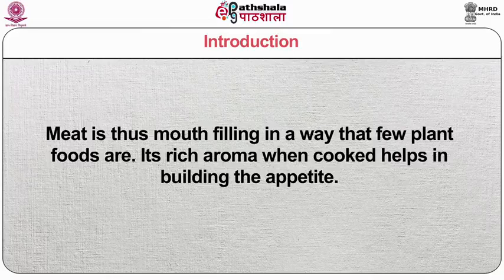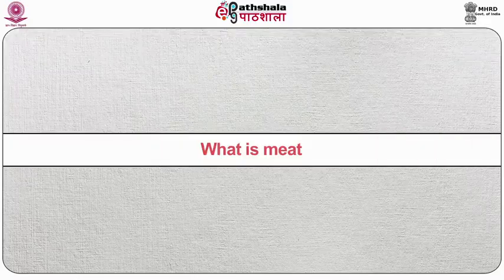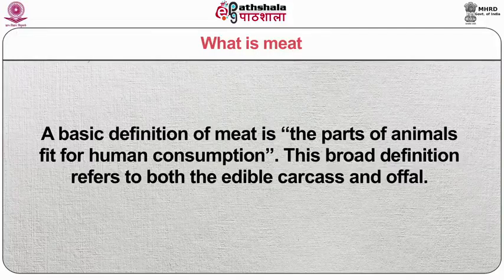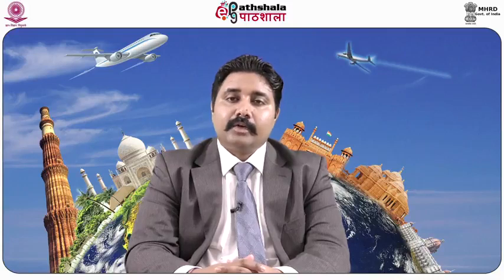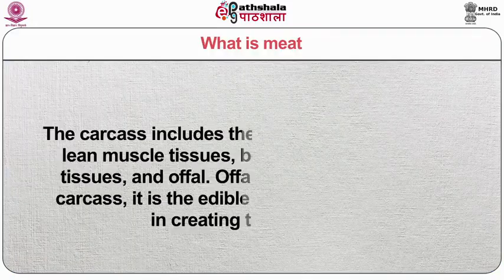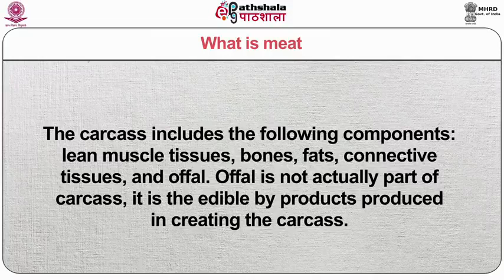Meat is mouth-filling in a way that few plant foods are. Its rich aroma when cooked helps in building the appetite. A basic definition of meat is the parts of animals fit for human consumption. This broad definition refers to both the edible carcass and offal. The definition of meat varies from species to species. For example, the hide is removed from beef, veal and lamb, but for pork and poultry it is considered part of meat. The carcass includes the following components: lean muscle tissues, bones, fats, connective tissues and offal.